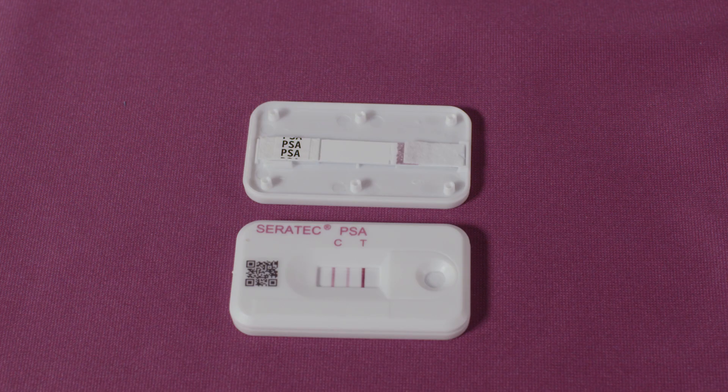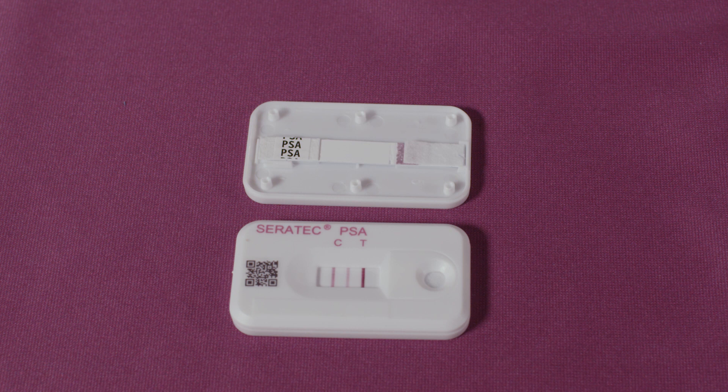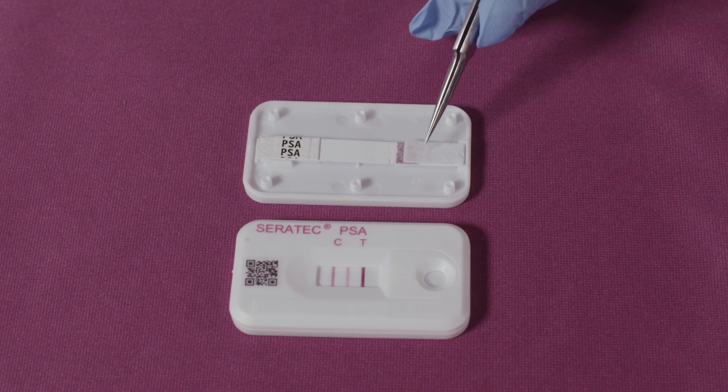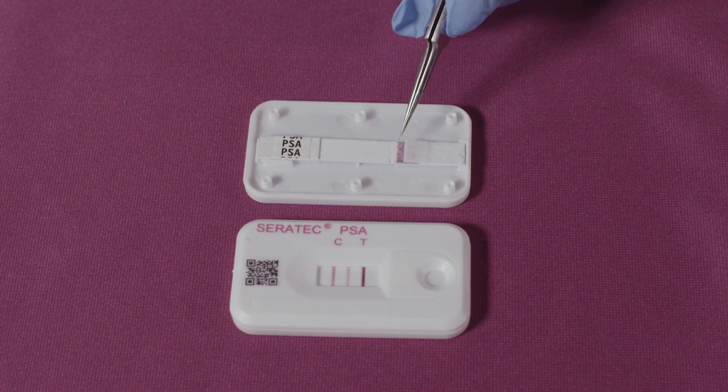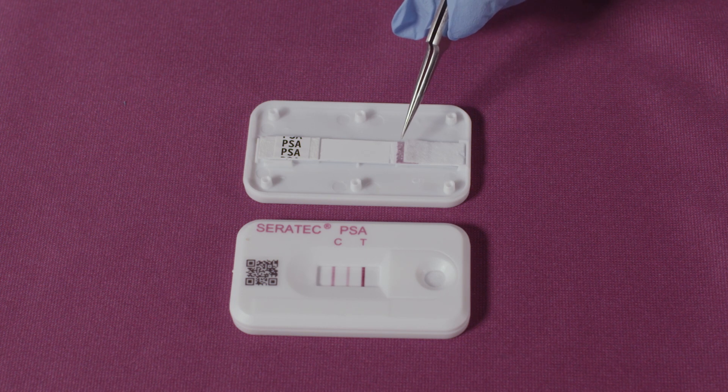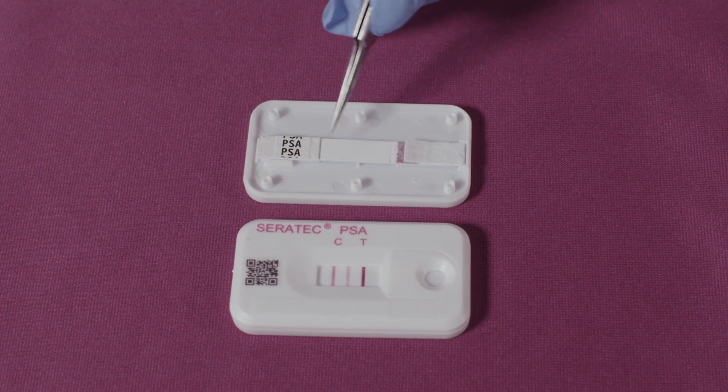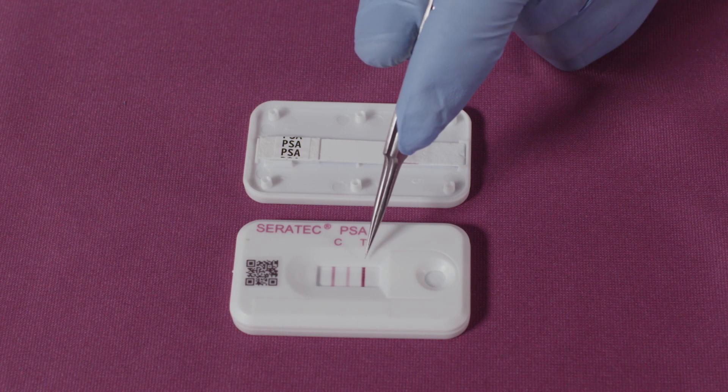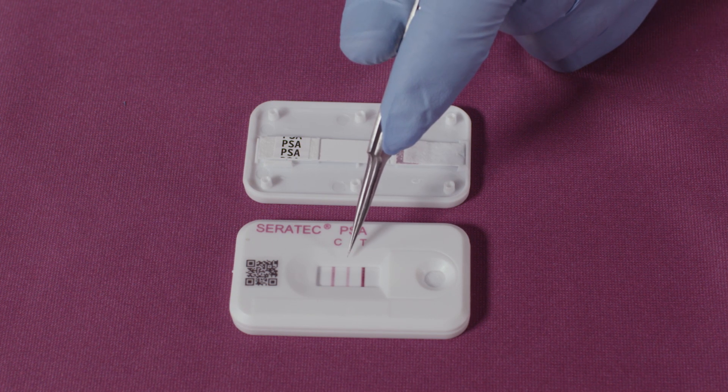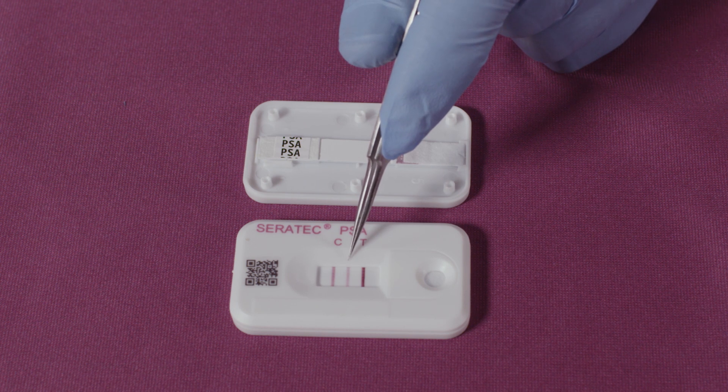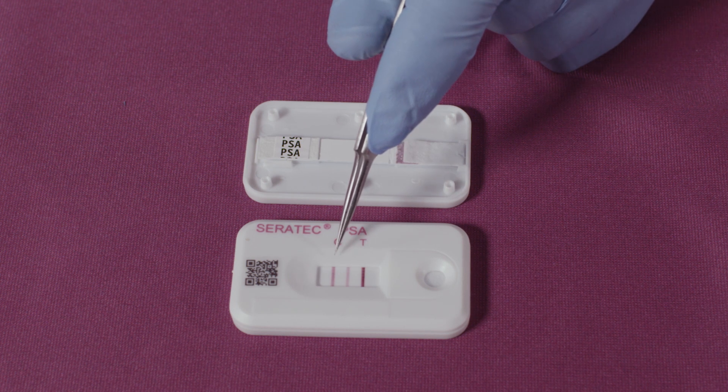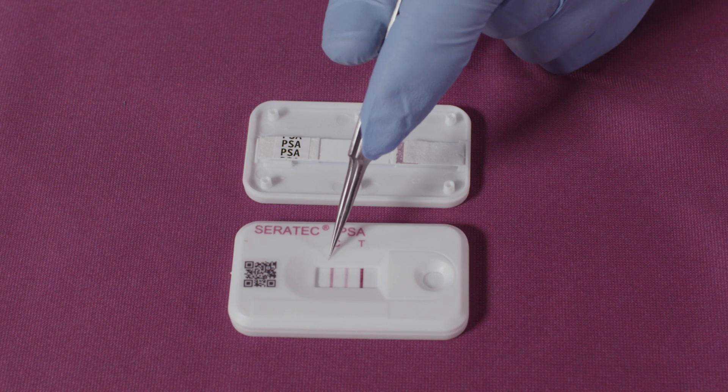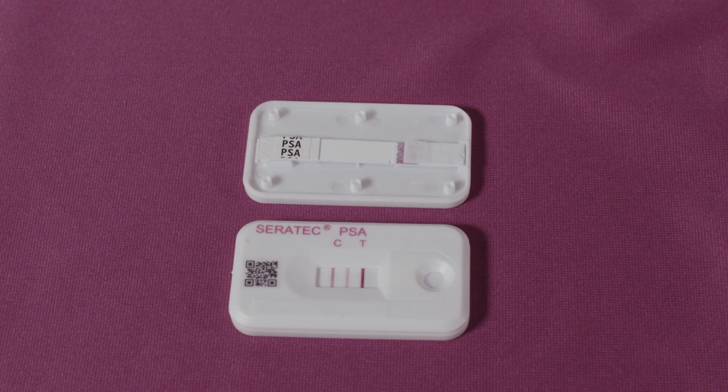The Ceratec PSA semi-quant test cassette consists of an absorbent pad, a gold labeled mobile human specific monoclonal antibody to human PSA, a nitrocellulose membrane, a second different fixed human specific monoclonal antibody to human PSA, an internal standard sample adjusted to a level of four nanograms per mil of PSA, and a control line containing anti-mouse antibodies.